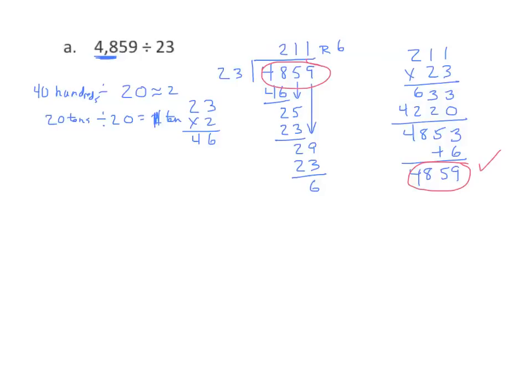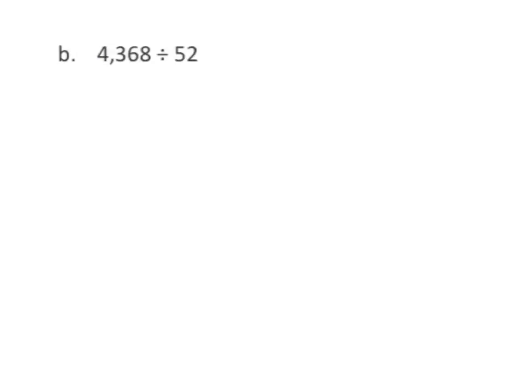Let's do another example. We have 4,368 divided by 52. Let's do our rounding — we start with our divisor and we get 50. We're going to look at our thousands, but we can't work with that because 50 is greater than 4. So we're going to decompose from our thousands to our hundreds — 43 hundreds. We still can't work with that, because 50 is greater than 43, so now we decompose to our tens place. So I have 436 tens.